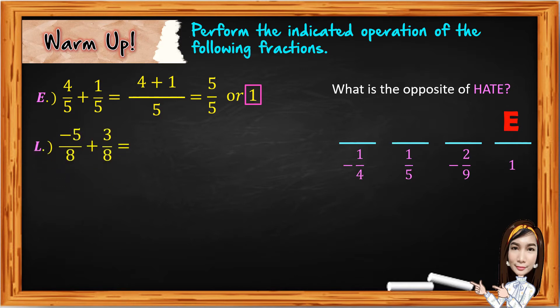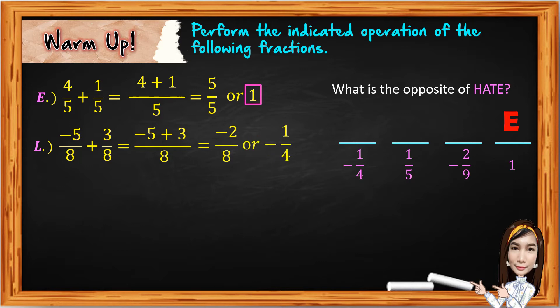For letter L, we have negative five over eight plus three over eight. Add the numerators — negative five plus three — then copy the common denominator. Applying the rule of integers with different signs, we subtract and follow the sign of the greater absolute value. The result is negative two over eight. Since they share a common factor of two, we simplify: negative two divided by two is negative one, and eight divided by two is four. So the lowest term is negative one-fourth. We write L above negative one-fourth.